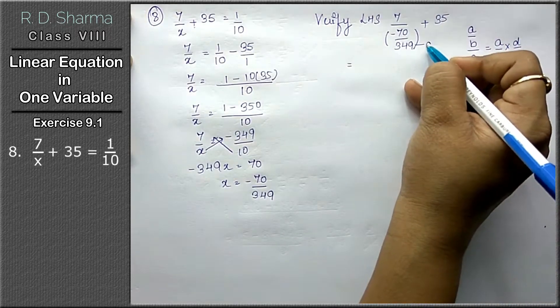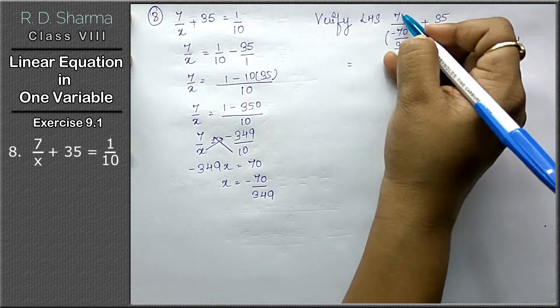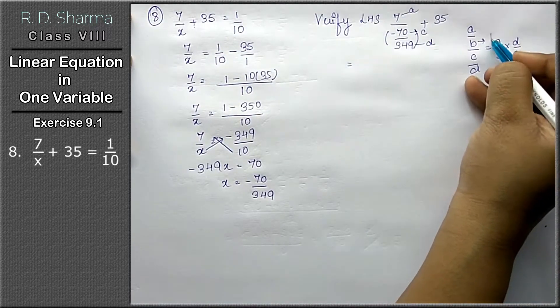Yahan, d 349 hai, c yahan, a yahan, nothing is b, that means 1 is b. b is 1 over here.